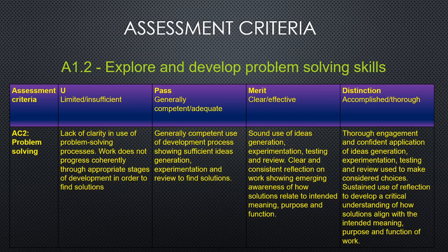Evaluation is a consistent reflection on your work — it shows you becoming more and more aware of the pros and cons of your piece. For a distinction you'll need thorough engagement and confident application of idea generation, experimentation, testing, and review, used to make considered choices. You'll need sustained use of reflection and a critical understanding of how solutions align with the intended meaning, purpose, and function of the work. It's got to be thorough — annotation, design, and evaluation all at a high level.